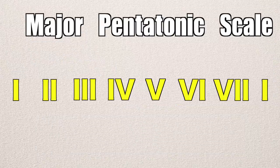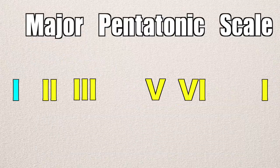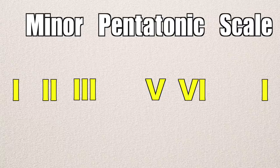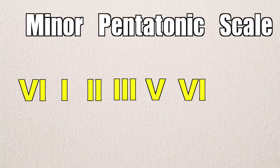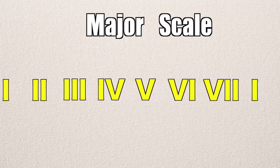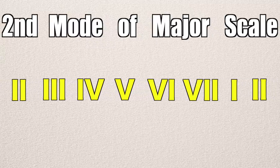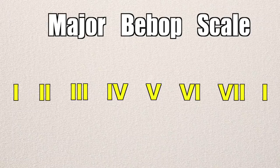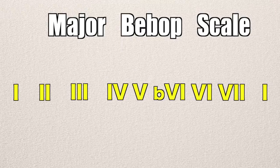A major pentatonic is simply a reduced version of the major scale. The minor pentatonic is the same set of notes, but it starts on the sixth. We can also create modes using our major scale — that is when we play a major scale but instead of starting on the one and going up to the one, we start on another scale degree and go up to that same scale degree an octave higher. There's also the option of creating bebop scales using our major scale by adding passing tones.